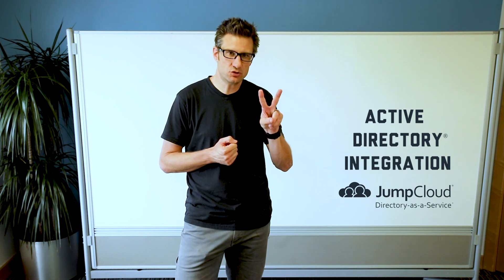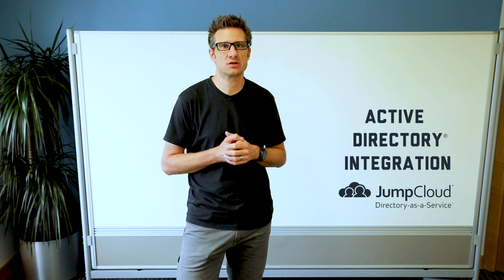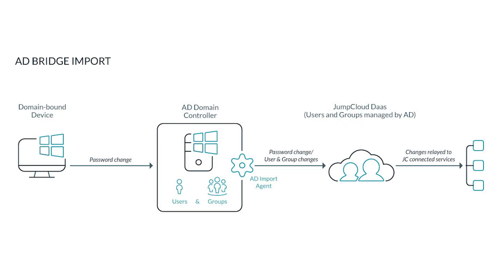The integration offers two main features. One is an importation feature, enabling you to push users and groups and objects like those directly into JumpCloud in order for you to take advantage of all of our cloud-based authentication services.